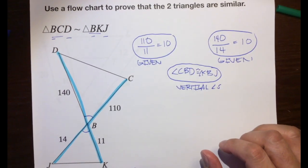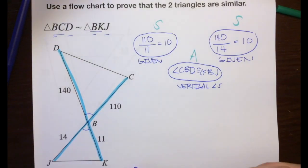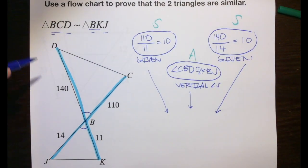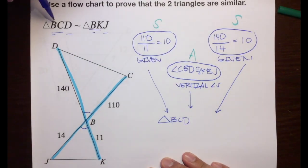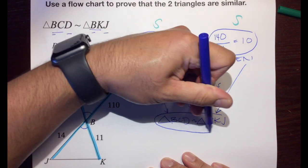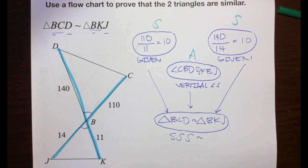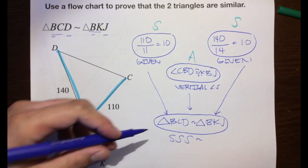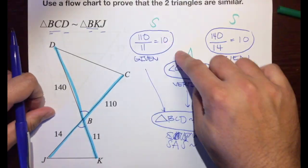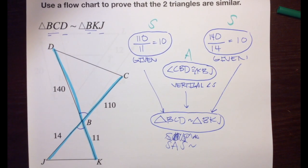So if you look at what we have: this is regarding a side, this is regarding an angle, and this is regarding a side — and that angle is sandwiched by the two sides. So we can conclude that triangle BCD is similar to triangle BKJ. For what reason? Side-angle-side similarity. Remember, that angle is sandwiched in between the two sides that are proportional.